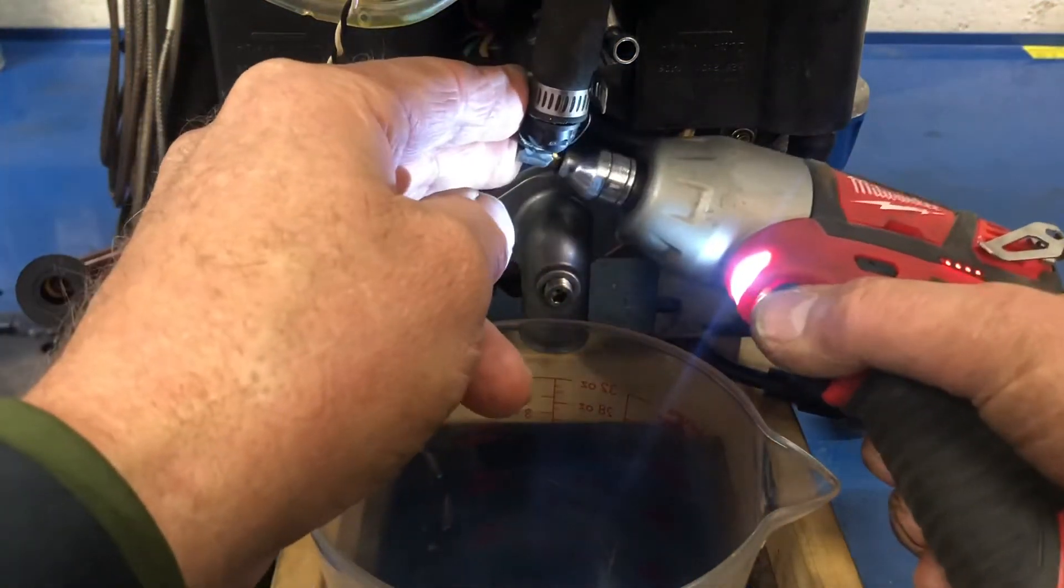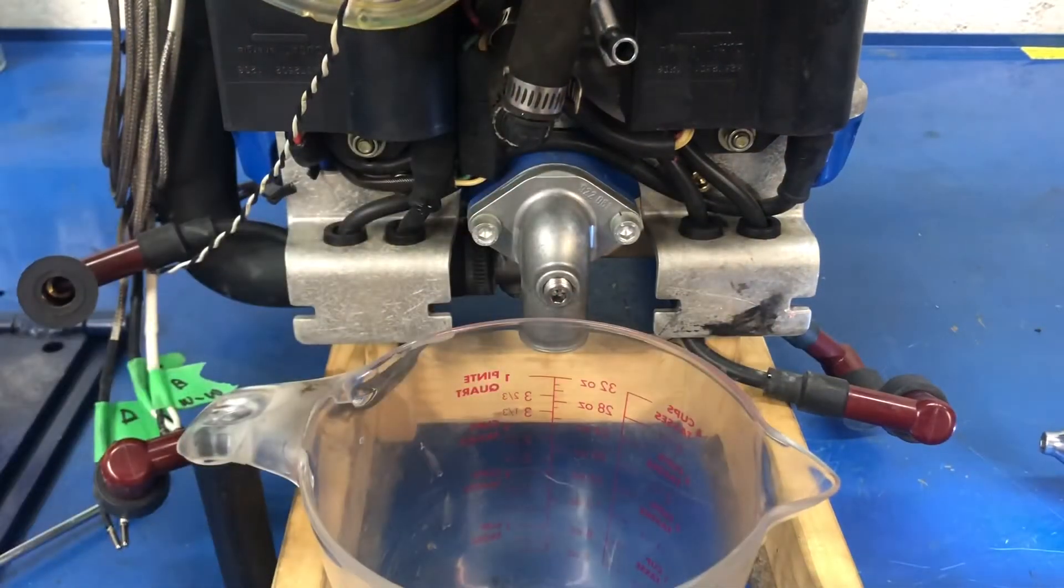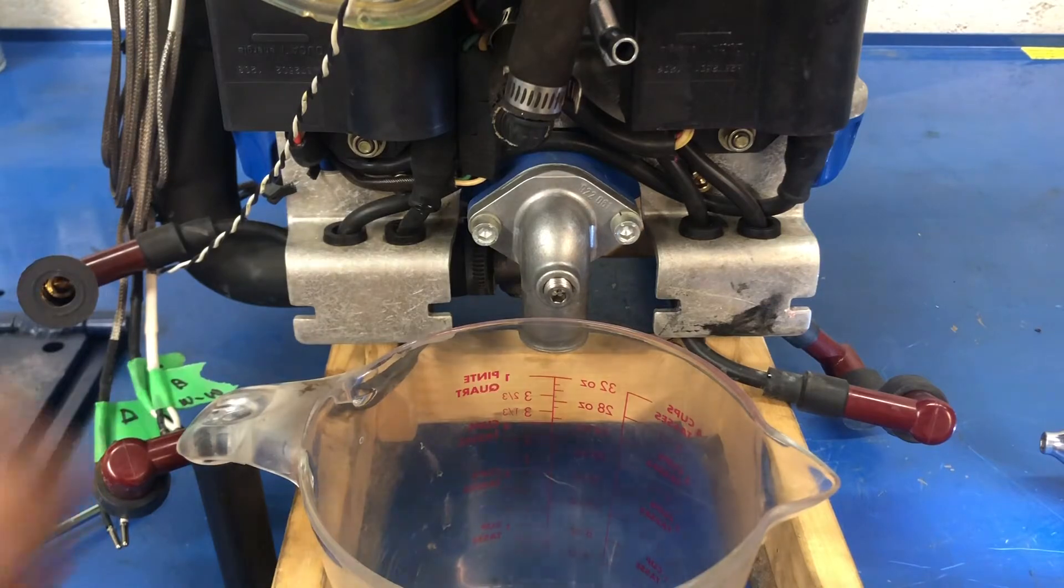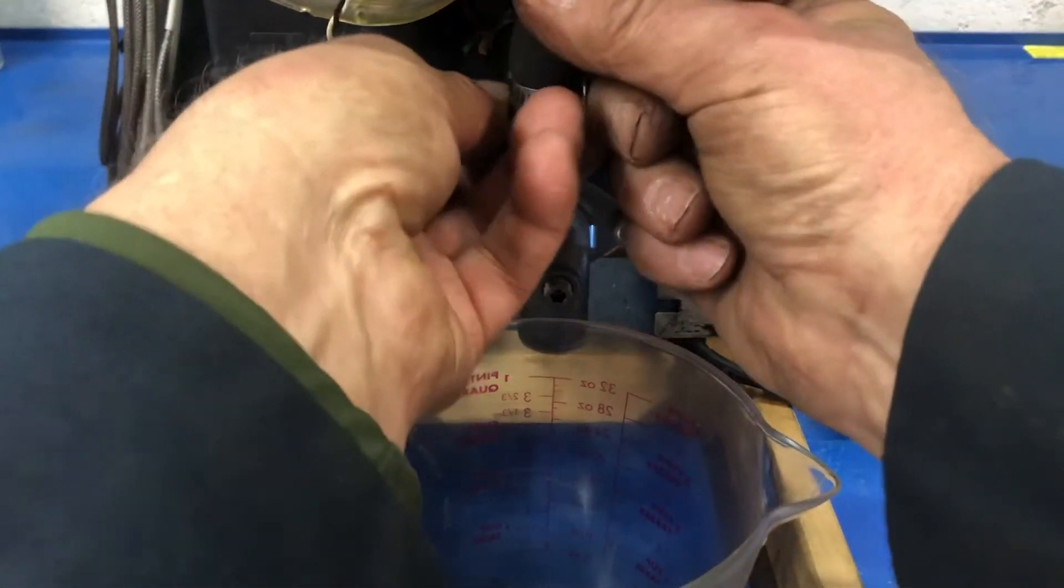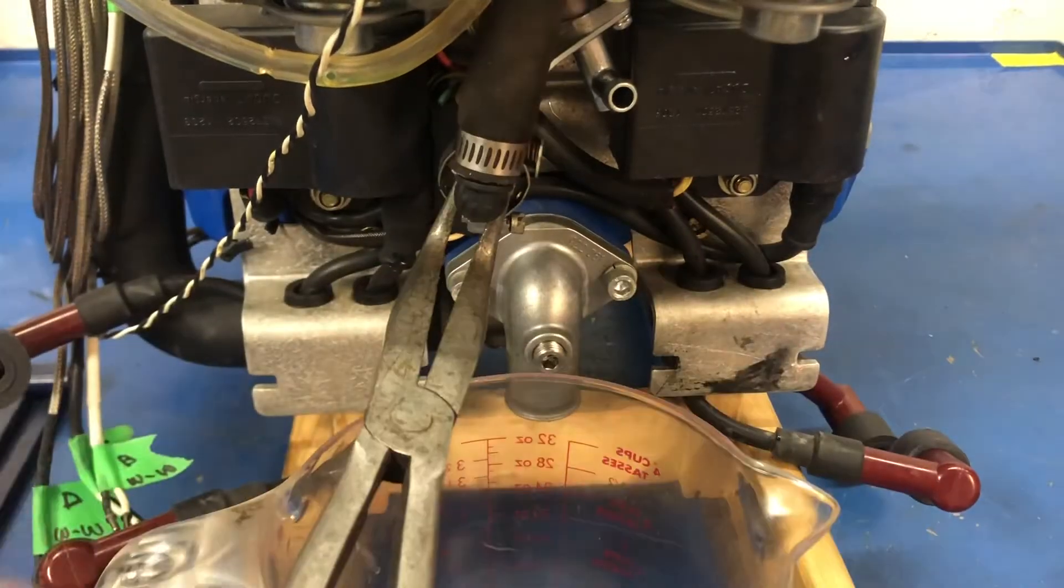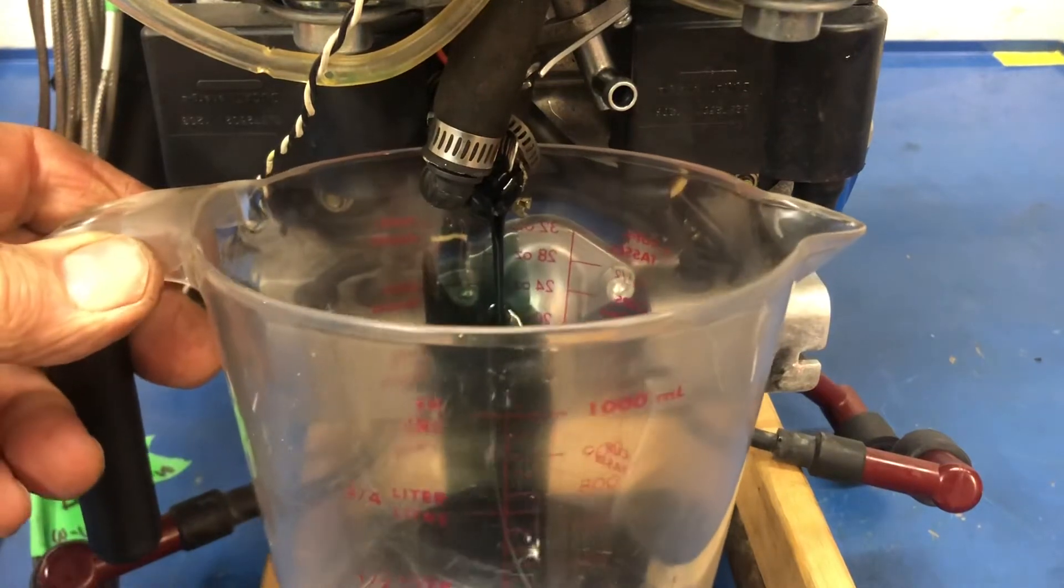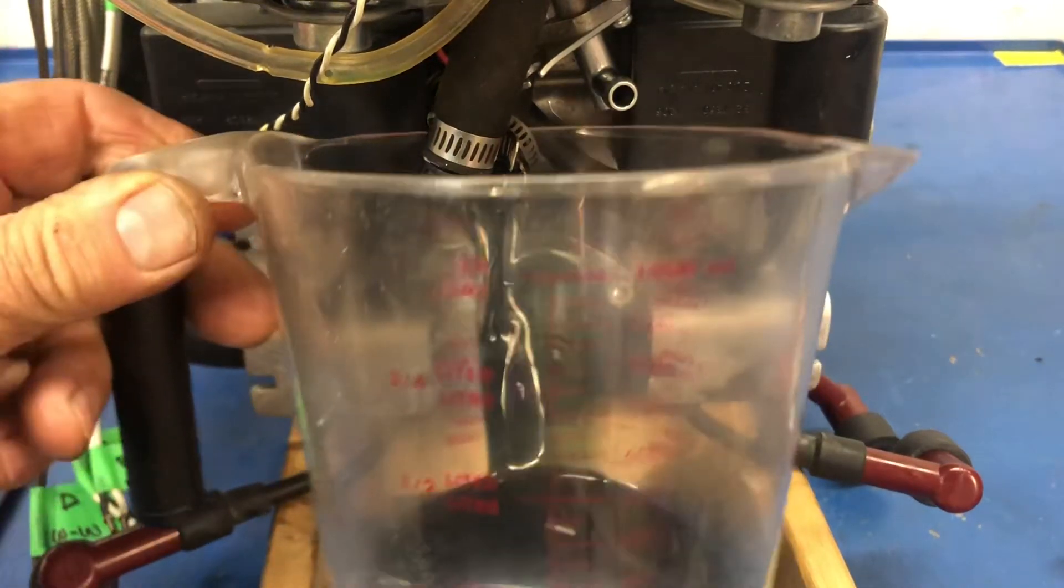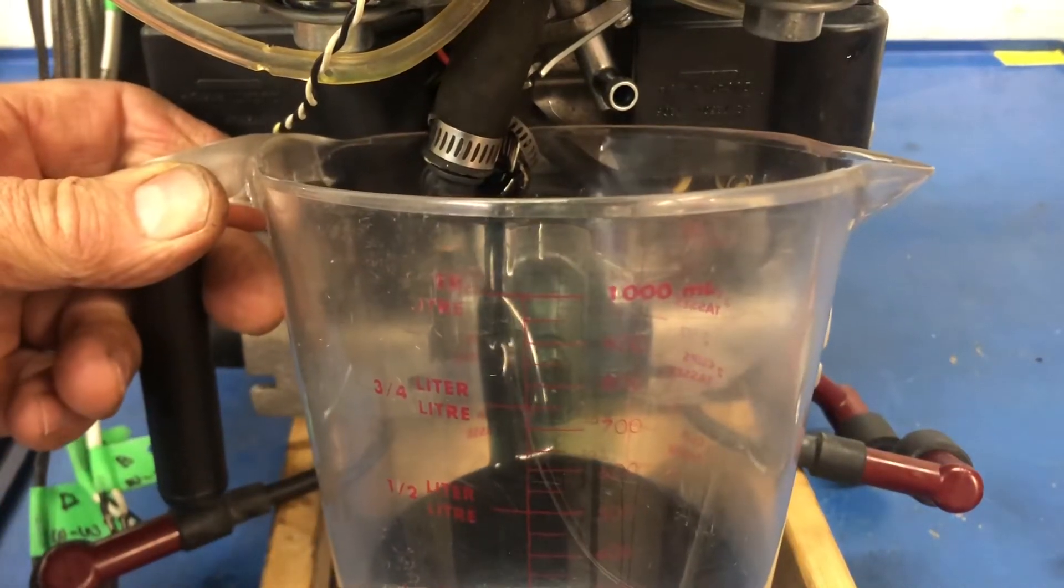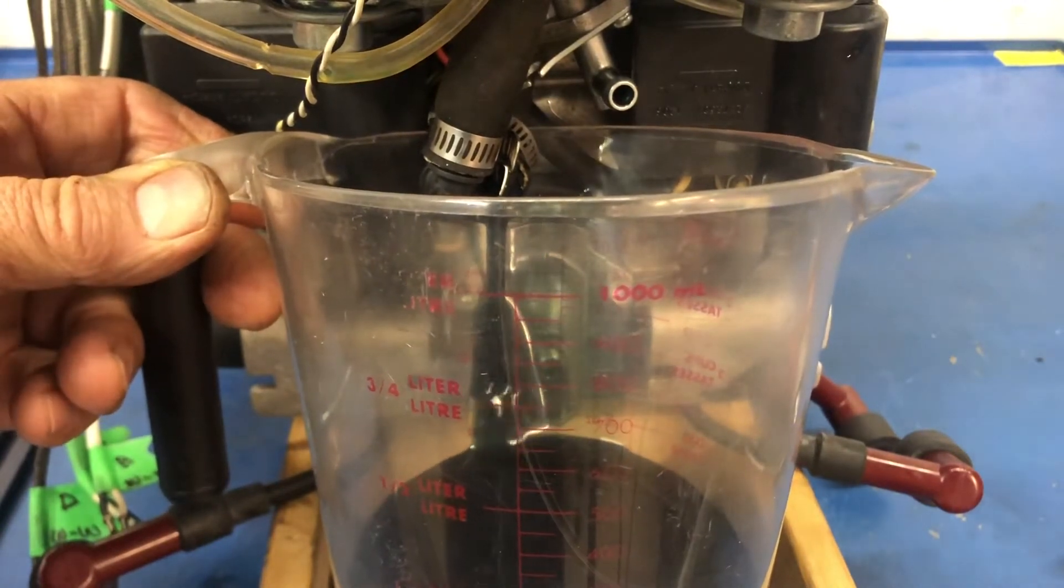So as I said in my other videos, make sure that you measure what you took out so that you know that you put enough back in. There's my clean container. So there we go. And let it drain and it will all come out. I'll take the cap off. It might make a little bit of a difference.